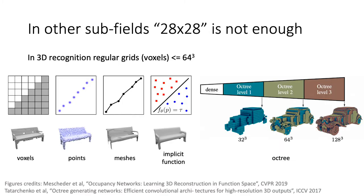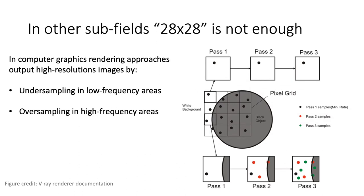I'll start by looking at other computer vision tasks. While 28×28 prediction is okay for instance segmentation, in other subfields more efficient approaches produce more detailed results without large memory and computational costs. For example, in 3D, grids of voxels cannot go beyond 64³ at the moment; instead, representations like point clouds, meshes, implicit functions, or octrees are used for high-resolution output. PointRend is closely related to the idea of implicit functions and octrees. In rendering, modern methods sample more points in high-frequency regions and fewer points in low-frequency areas, achieving high resolution while allocating computation only where needed.